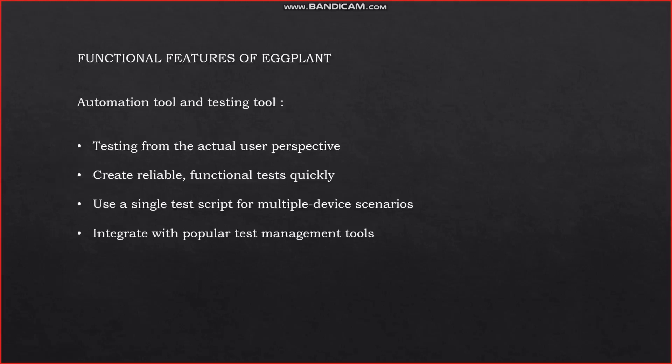Now we are going to see the functional features of Eggplant automation tool — testing from the actual user perspective. You can create reliable functional tests quickly and use a single test script for multiple scenarios. Test any technology on any platform, like mobile iOS or Android. For web, it supports Chrome, Safari, and Edge. For operating systems, it supports Windows, Mac OS, and Linux. It can be used anywhere at any time.